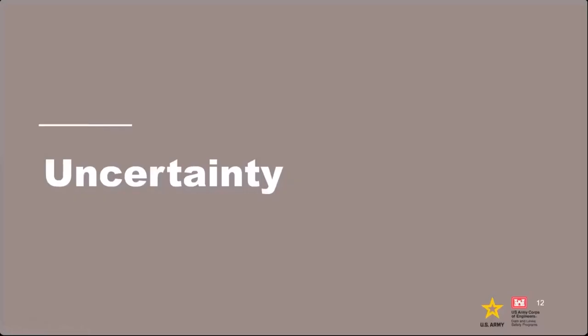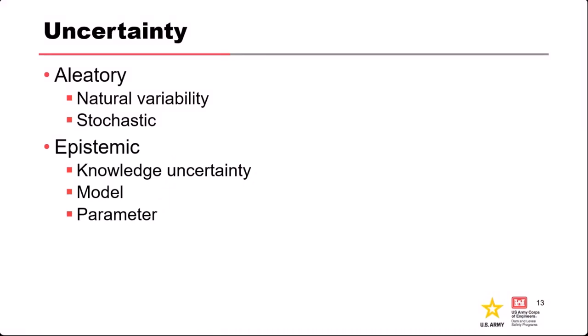Now let's transition to talk about uncertainty. There are two general types of uncertainty commonly referred to in the literature. The terms you'll see often are aleatory and epistemic — they come from Latin or Greek roots. I'm not a big fan of the fancy words, but they are the terms you'll encounter frequently.